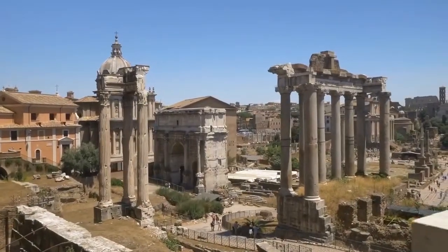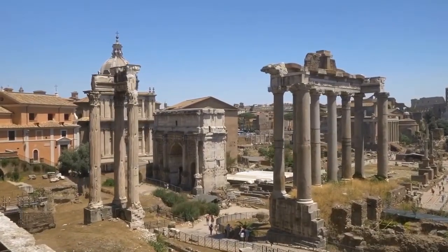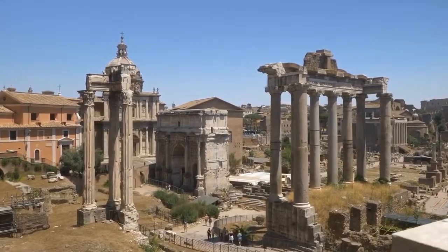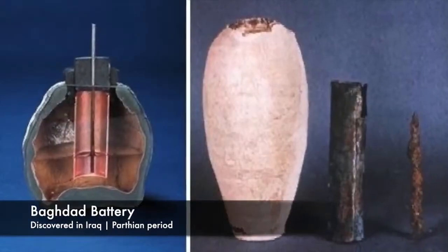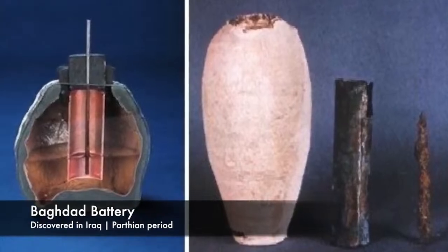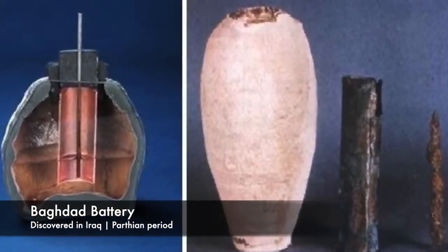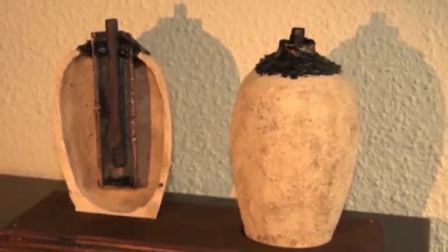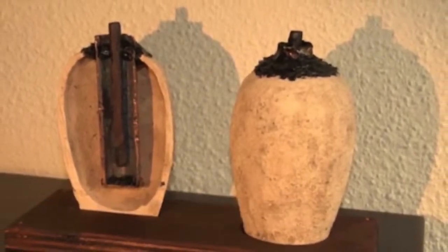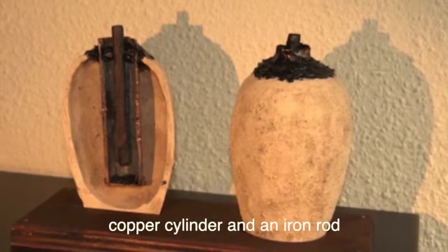The story of batteries begins thousands of years ago, with ancient civilizations experimenting with electrochemical cells. The Baghdad battery, discovered in Iraq, dates back to the Parthian period and is believed to be one of the earliest examples of a battery-like device. It consists of a clay jar containing a copper cylinder and an iron rod.